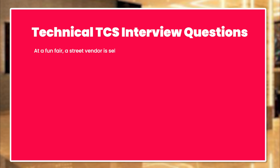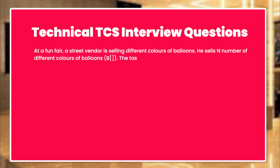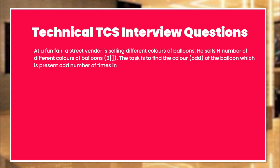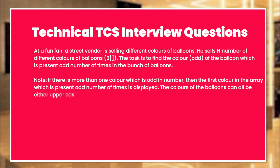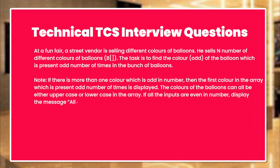At a fun fair, a street vendor is selling different colors of balloons. He sells N number of different colors of balloons. The task is to find the color of the balloon which is present an odd number of times in the bunch of balloons. Note: if there is more than one color which is odd in number, then the first color in the array which is present an odd number of times is displayed. The color of the balloons can all be either uppercase or lowercase in the array. If all the inputs are even in number, display the message: all are even.